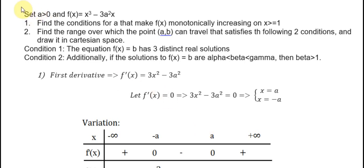Here is the question. Set a is greater than 0, and function f is equal to s power 3 minus 3a power 2 times s.